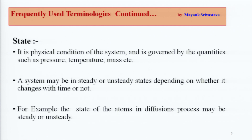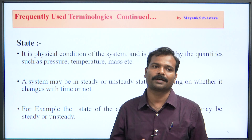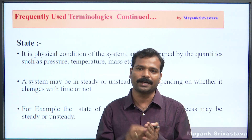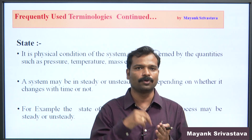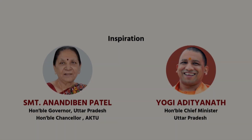A system may be steady or unsteady state depending on whether it changes with time or not. The system is either steady or unsteady — it depends on the time, and changes with time or not. For example, a state of atoms in a diffusion process may be steady or unsteady. In today's lecture, we covered the properties, state, and basics of phase diagrams. We talked about phase diagrams — unary, binary, and two compositions. We discussed this. In the next lecture, we will discuss this further. Okay, thanks a lot. Thank you.